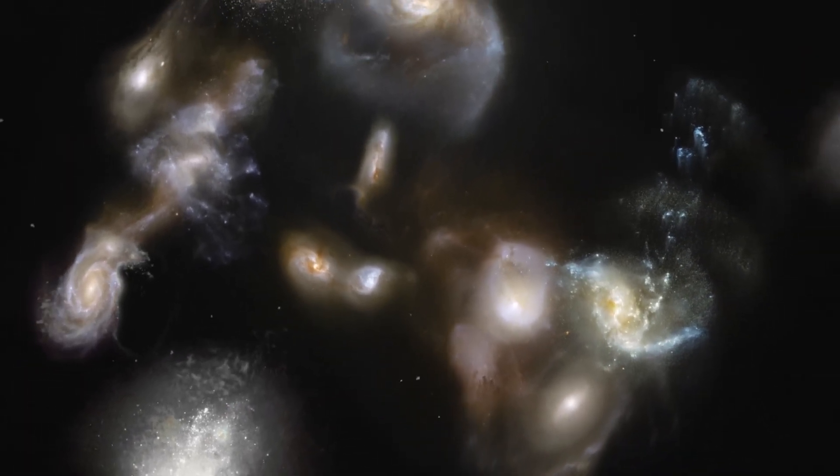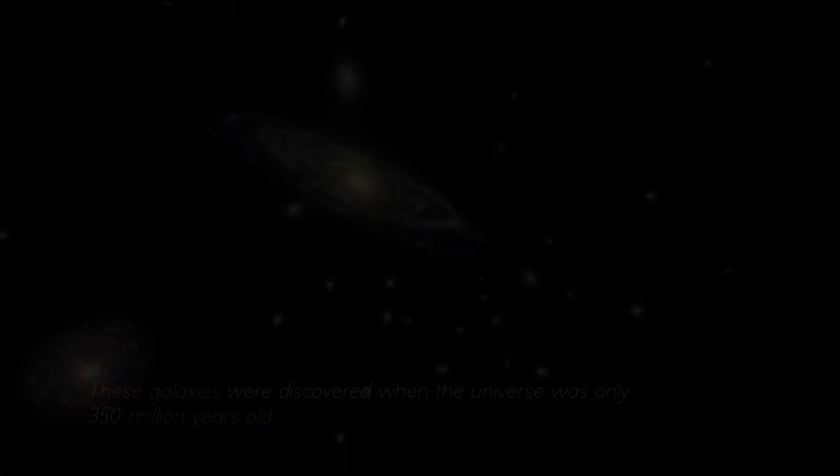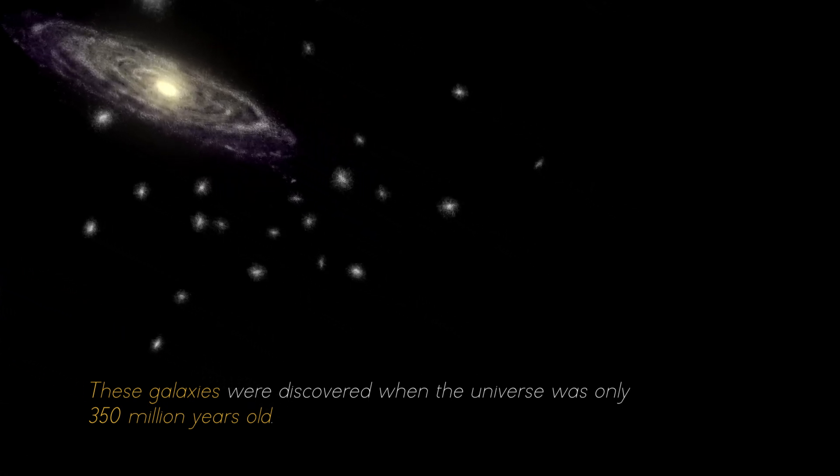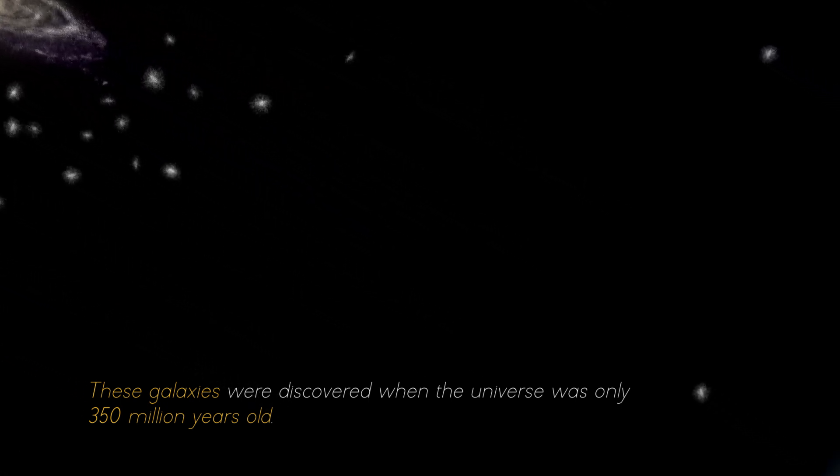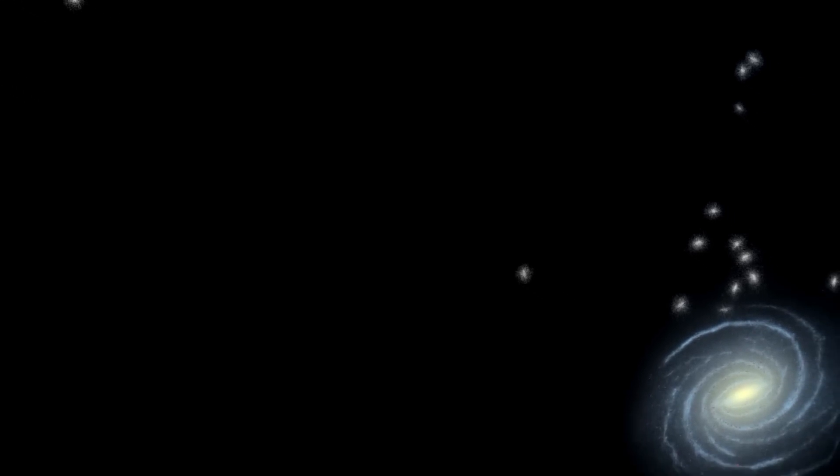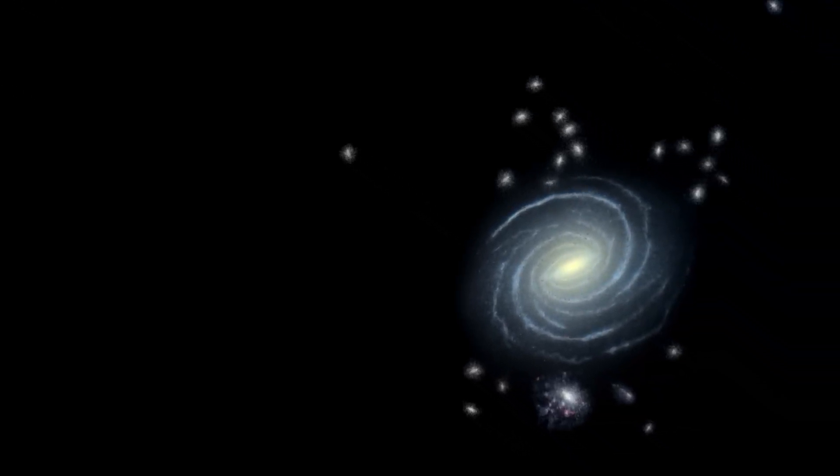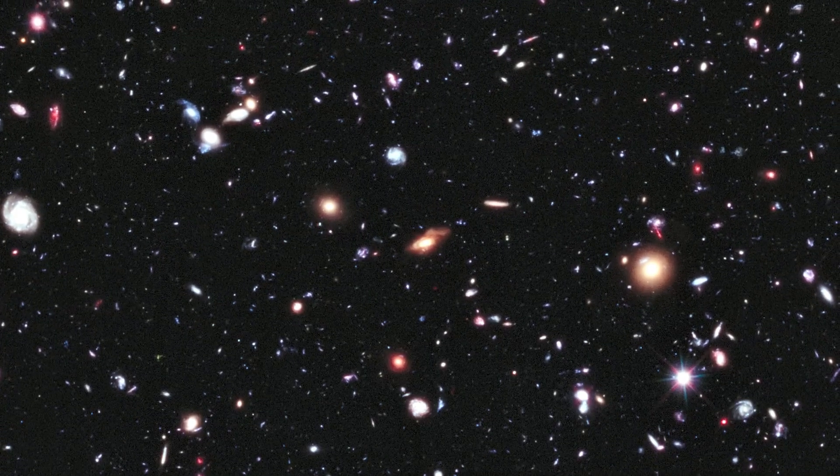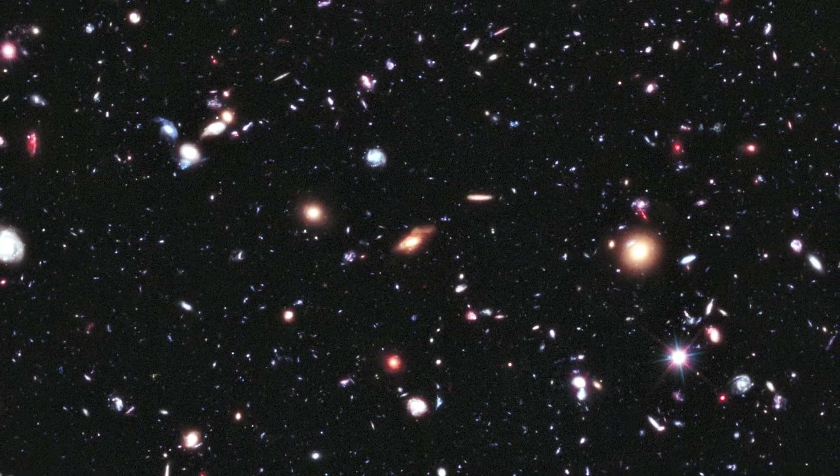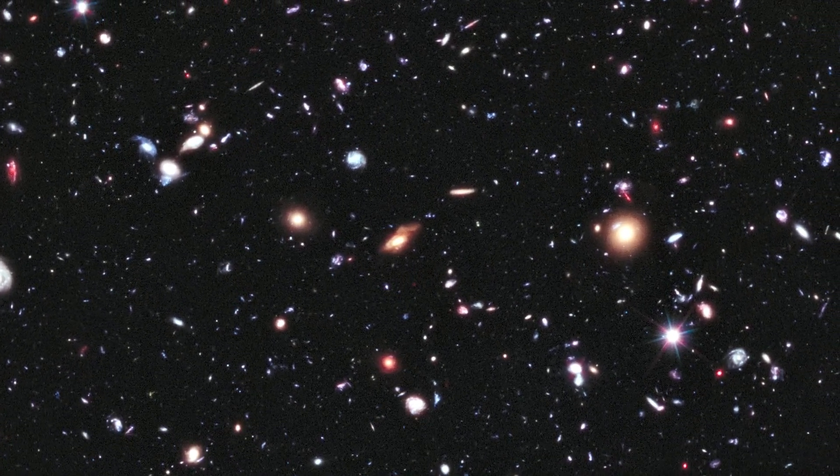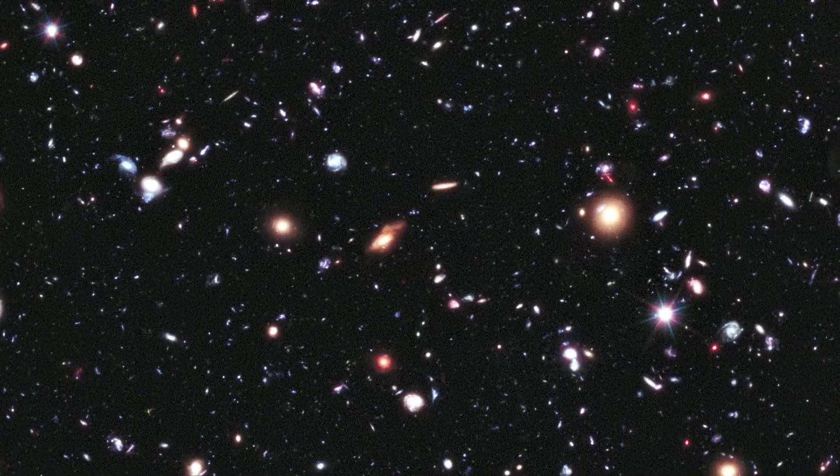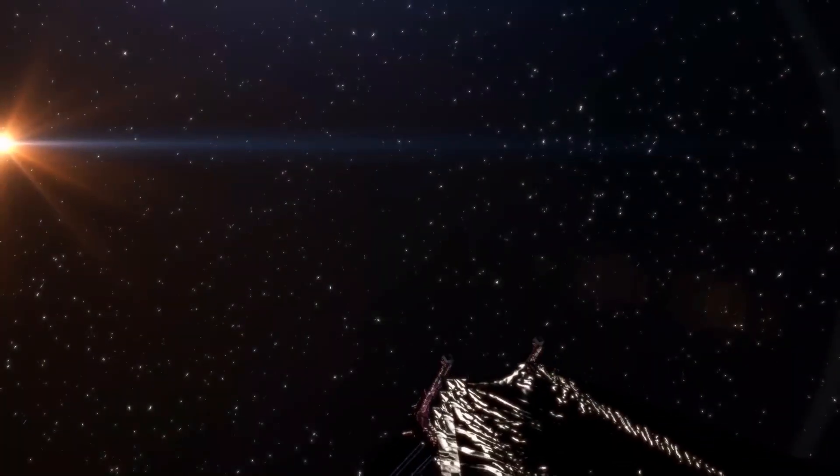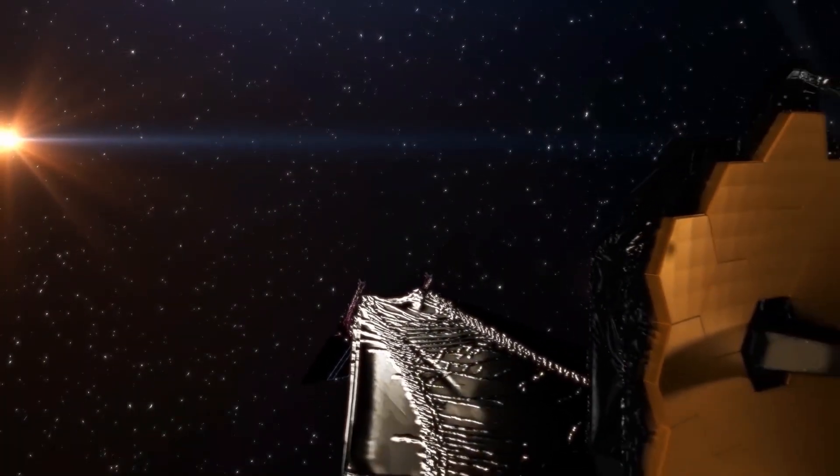These galaxies were discovered when the universe was only 350 million years old, shedding light on how quickly the first generations of galaxies emerged. Spectral data confirmed that these galaxies are at the edge of our view, some even further away than Hubble could see.